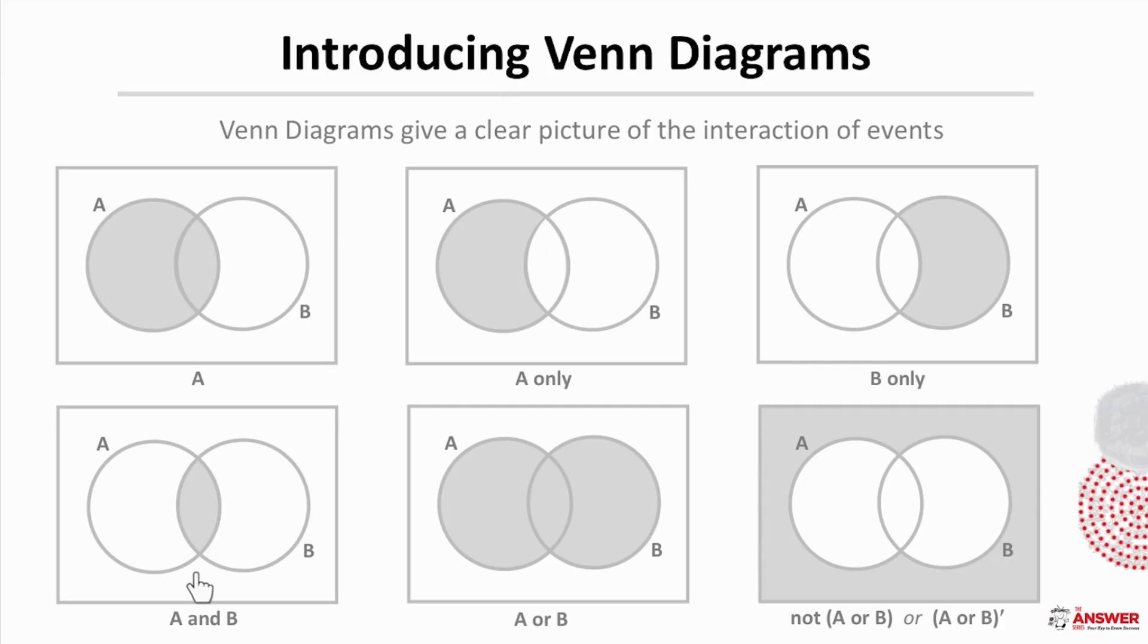Then this next example shows the overlap of A and B, in other words the area they have in common. And then here A only, B only and the overlap of A and B have all been selected and we refer to this as A or B.